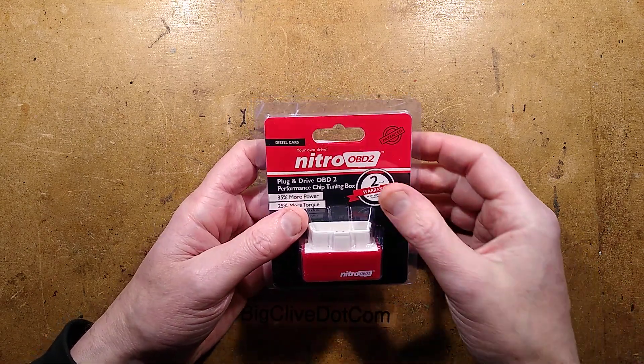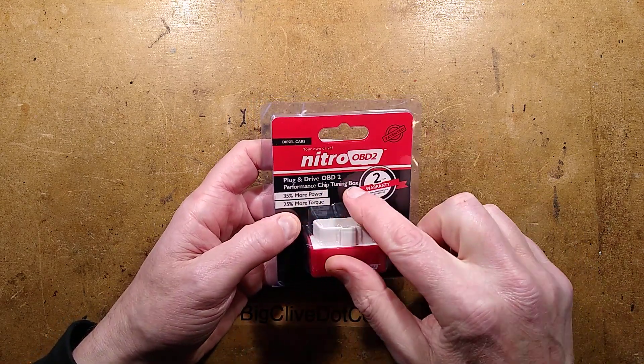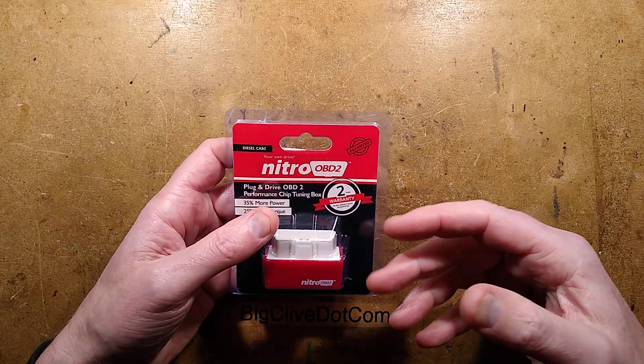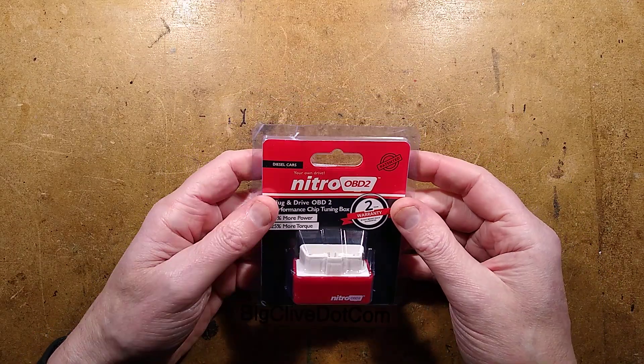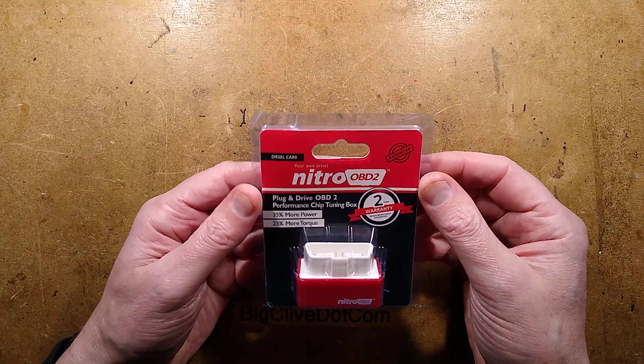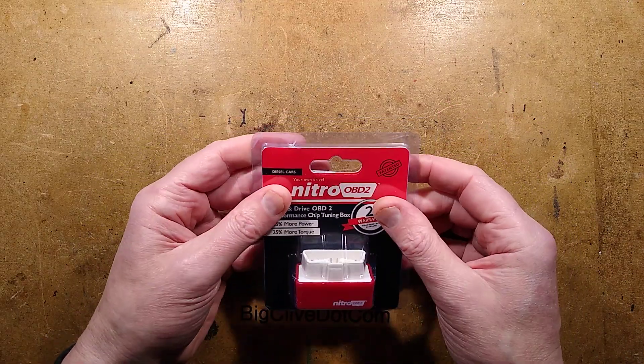Let's take a look at a Nitro OBD2 performance chip tuning box from Temu or AliExpress or eBay or any of the online marketplaces. You might even be able to buy one from some unscrupulous garages and from some individuals who will be touting them in the pub.